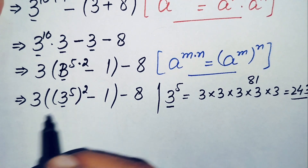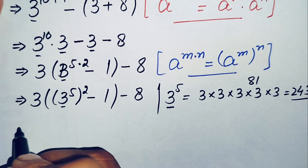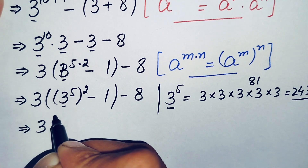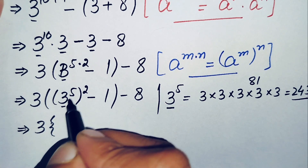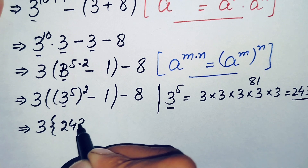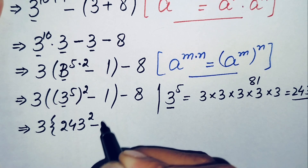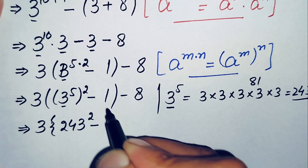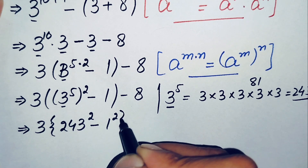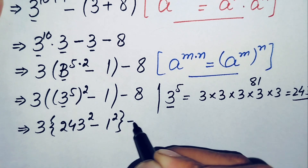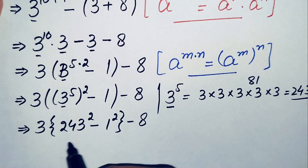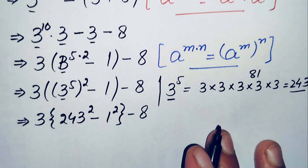So here we will replace 3^5 with its value 243. This becomes 3 times (243² minus 1²) minus 8. We can write 1 as 1², which is the same as 1. Now inside the braces we will use another algebraic identity.